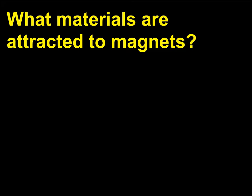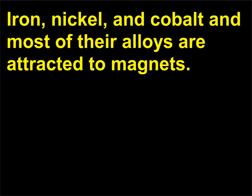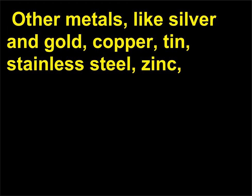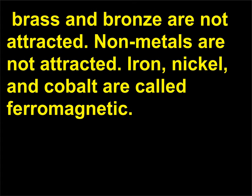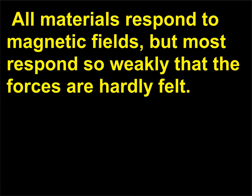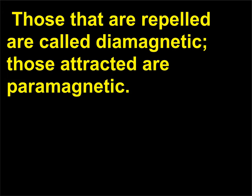What materials are attracted to magnets? Iron, nickel, and cobalt and most of their alloys are attracted to magnets. Other metals, like silver, gold, copper, tin, stainless steel, zinc, brass, and bronze are not attracted. Non-metals are not attracted. Iron, nickel, and cobalt are called ferromagnetic. All materials respond to magnetic fields, but most respond so weakly that the forces are hardly felt. Those that are repelled are called diamagnetic; those attracted are paramagnetic.